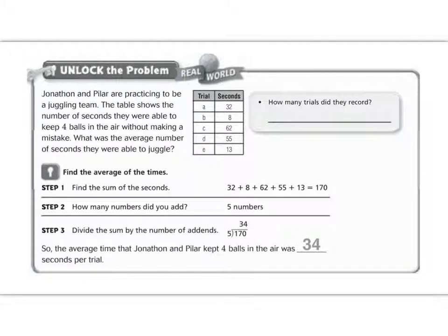Unlock the problem. Jonathan and Pillar are practicing to be a juggling team. The table shows the number of seconds they were able to keep four balls in the air without making a mistake. What is the average number of seconds they were able to juggle? We've talked about average in 5th grade before. We talked about it when we made the line plots. We added up everything together and then we divided to find the average.